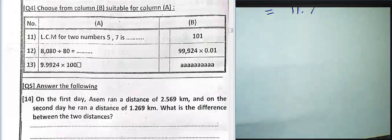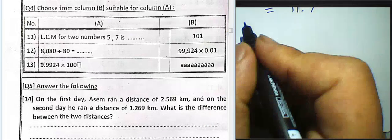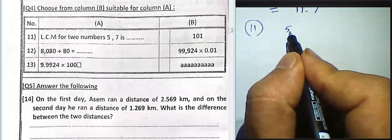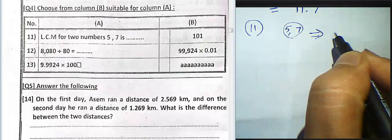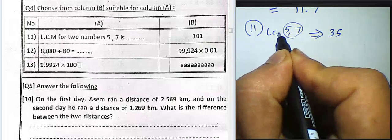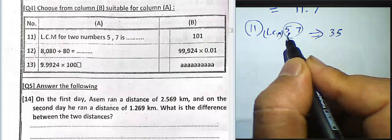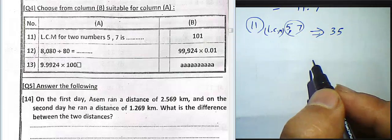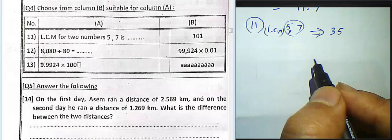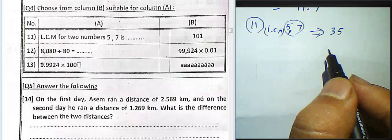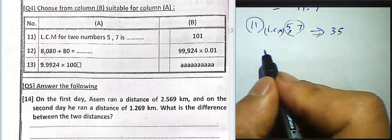Question 11: the least common multiple of 5 and 7. The LCM of 5 and 7 is 35.